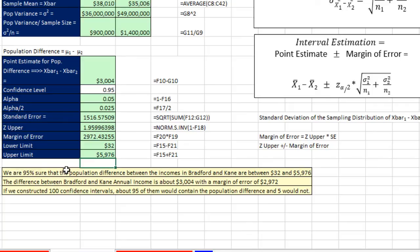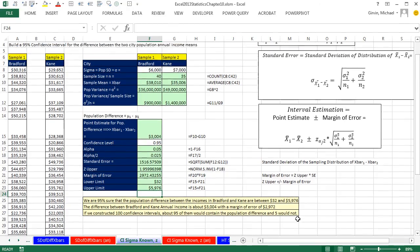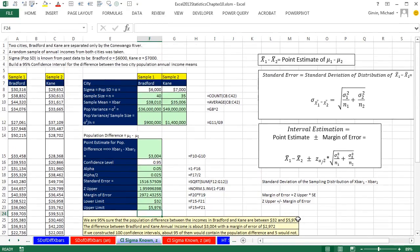It seems like there is a difference. The difference between Bradford and Kane annual income is about $3,000 with a margin of error of about $3,000. And this is the technical description of our confidence interval. If we construct 100 confidence intervals, about 95 of them would contain the population difference and five would not.